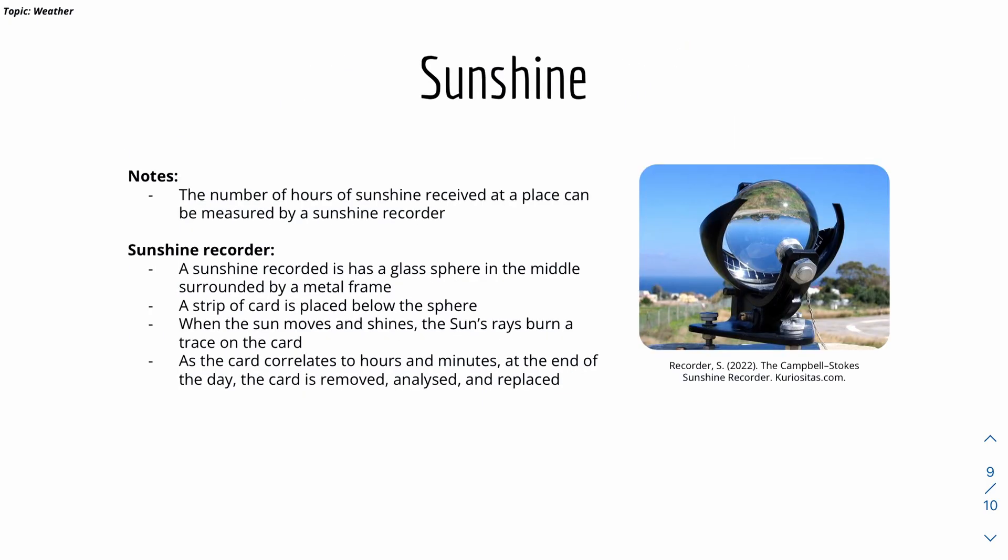Then we have sunshine, which is basically a measure of the number of hours of sunshine received at the place. It can be recorded with a sunshine recorder. Here's what a sunshine recorder looks like. We have this glass sphere in the middle, surrounded by a metal frame.